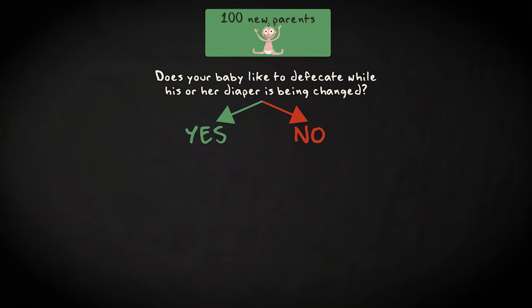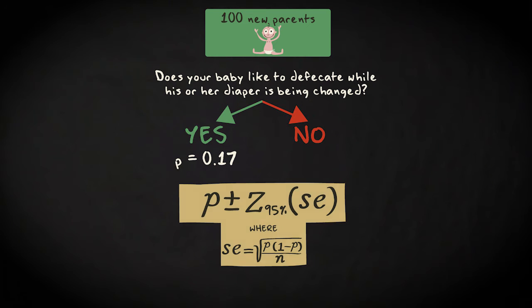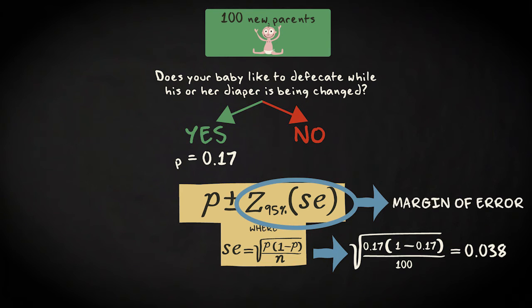Let's go back to our example. We have a proportion of 0.17 that reports that the baby poos while the diaper is being changed. Let's first compute the standard error. It's the square root of 0.17 times 0.83 divided by 100. That makes about 0.038. The margin of error then is 1.96 times 0.038. That's about 0.07.